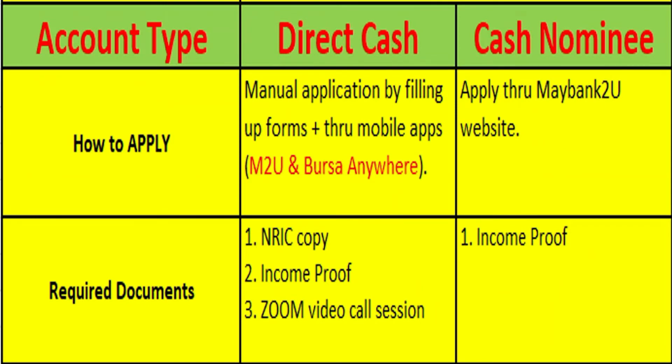To apply for the direct cash account, you need to submit the application forms and have two apps ready on your mobile phone — Maybank2u and Bursa Anywhere. I will guide you through if you want to apply. For the cash nominee account, it will be easier — you just need to access the Maybank2u website to apply.